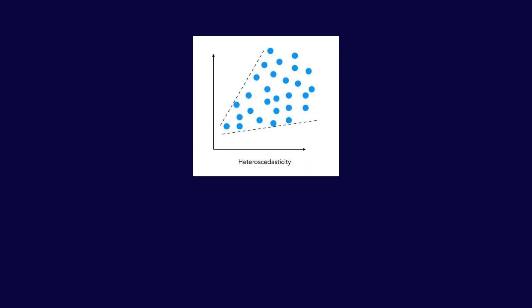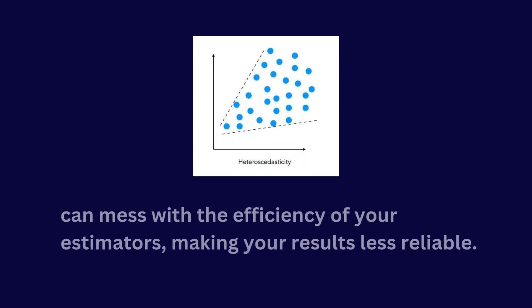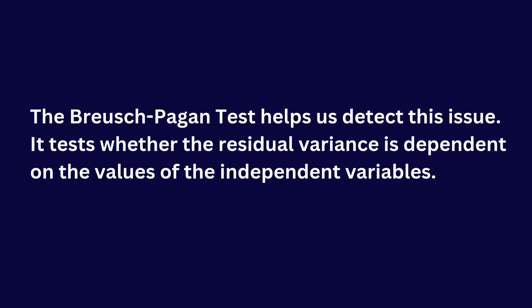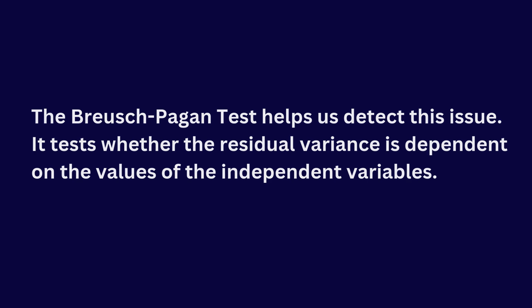Why does this matter? Well, heteroskedasticity can mess with the efficiency of your estimators, making your results less reliable. The Breusch-Pagan test helps us detect these issues. It tests whether the residual variance is dependent on the values of the independent variables.